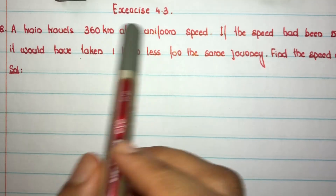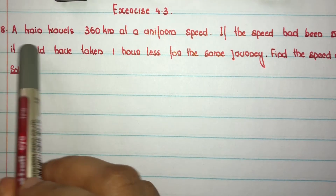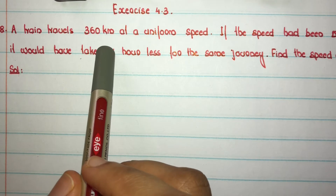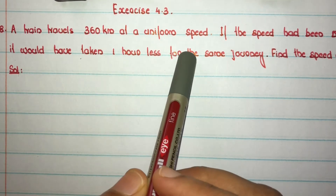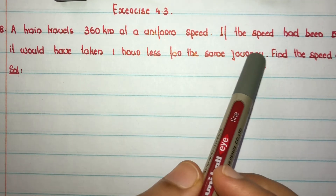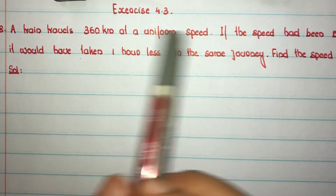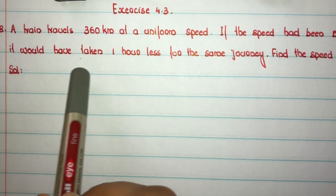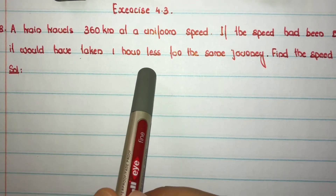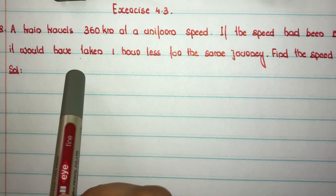Exercise 4.3, question number 8. A train travels 360 kilometers at a uniform speed. If the speed had been 5 kilometers per hour more, it would have taken 1 hour less for the same journey. Find the speed of the train.